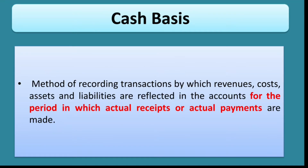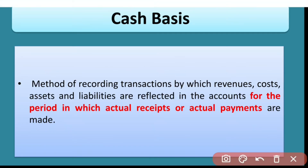The other method is the cash basis. This method is very easy because we record all the actual receipts and actual payments made in the year, irrespective of whether we've accrued them in the same year or not. Whatever we've received in cash we record, and whatever payment we've made in cash we record in the same period.